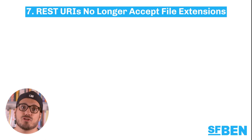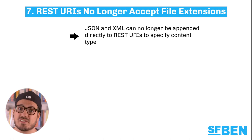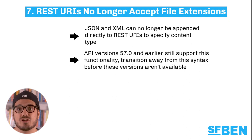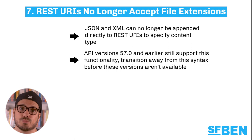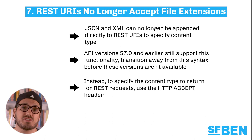There has been a behavior change to the REST URIs. JSON and XML can no longer be appended directly to REST URIs to specify content type. Although API versions 57 and earlier still support this functionality, transition away from this syntax before these versions are no longer available. Instead, to specify the content type to return for REST requests, use the HTTP Accept header.